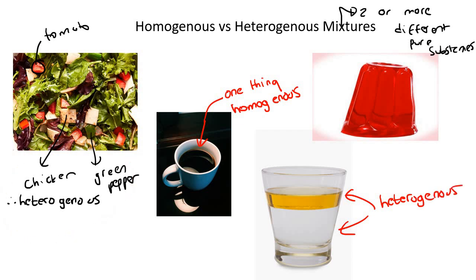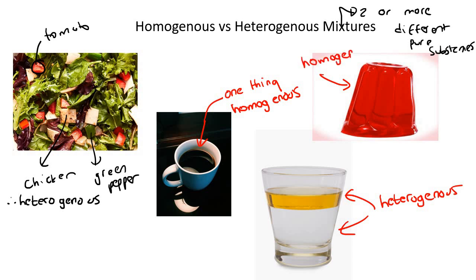What about over here where we've got the jelly? Well, it looks like one thing. Obviously there are different parts in there — there's the jelly powder, there's the water — but it only looks like there's one thing. And so that is homogeneous, just like the coffee.